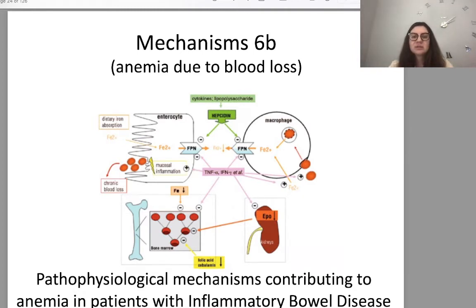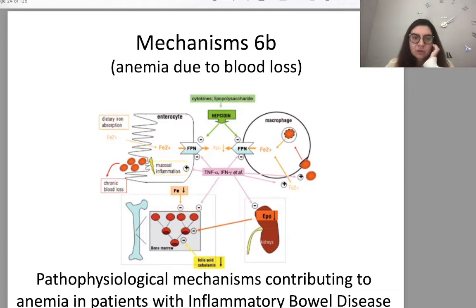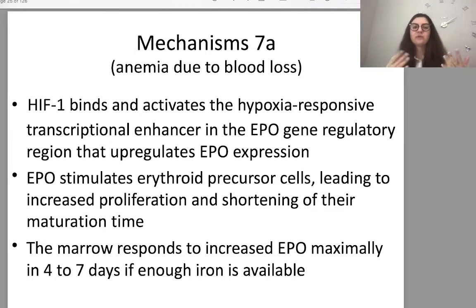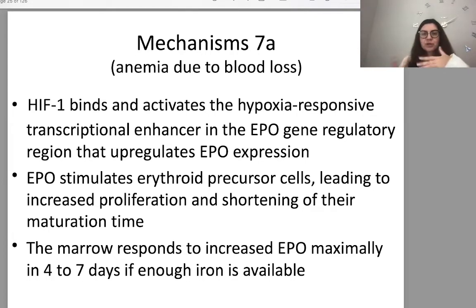Here you see a scheme of pathophysiological mechanisms contributing to anemia in patients with inflammatory bowel disease, including macrophage activation, enterocytes with iron transport, and related chemicals. HIF activates the hypoxia-responsive transcriptional enhancer and erythropoietin gene regulatory region, which regulates erythropoietin expression. Erythropoietin stimulates erythroid precursor cells, leading to increased proliferation and shortening of maturation time. The marrow responds to increased erythropoietin maximally in 4–7 days; if iron is available, erythropoietin stimulates erythrocyte production in a very short time.